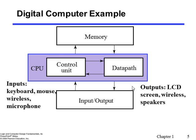A digital computer, which we will study in detail in this course and in Computer Organization 2, consists of a CPU (central processing unit), memory, and input/output devices. Input devices include the keyboard, mouse, and many others; output includes screens, speakers, and so on. The output depends not only on the current input but also on what has been done before — the state of the system. So a digital computer system is generally a sequential circuit system.